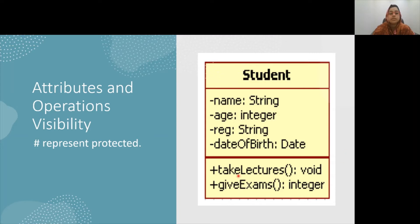Public visibility means that a feature is available to any class associated with the class that owns it. So takeLectures and giveExams, which have public visibility, are accessible to any class associated with this particular student class. Protected visibility means that a feature is available within the class that owns it and any subtype of that class may also have access to that particular feature.